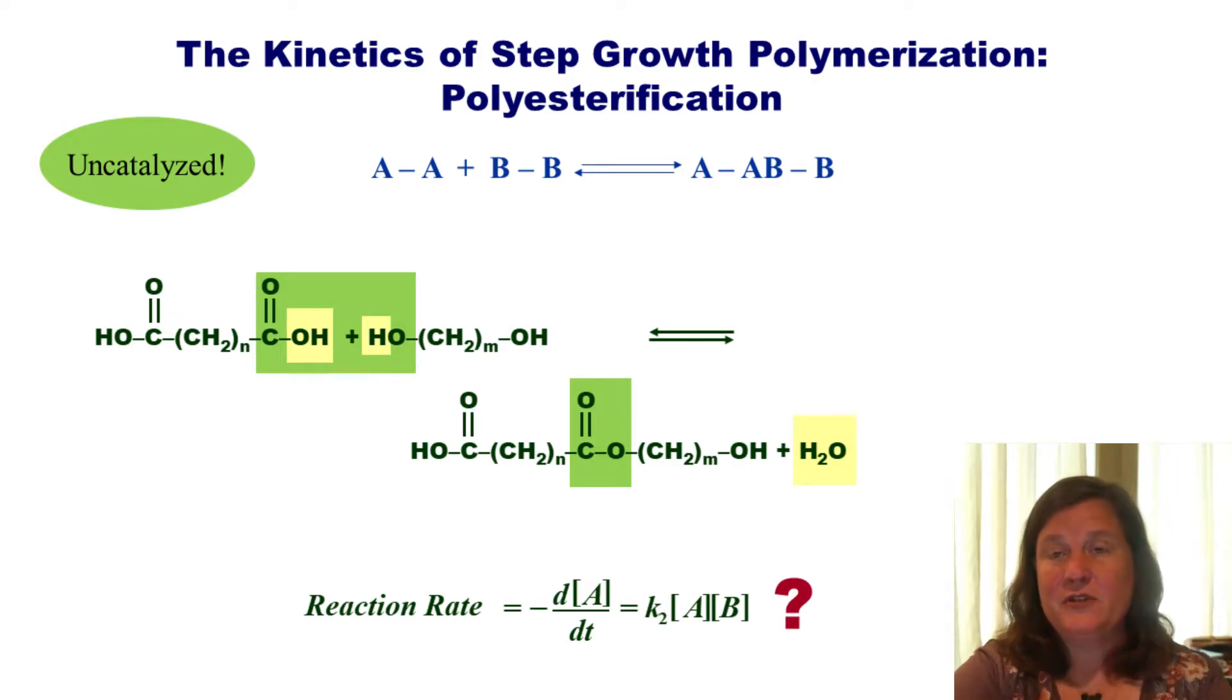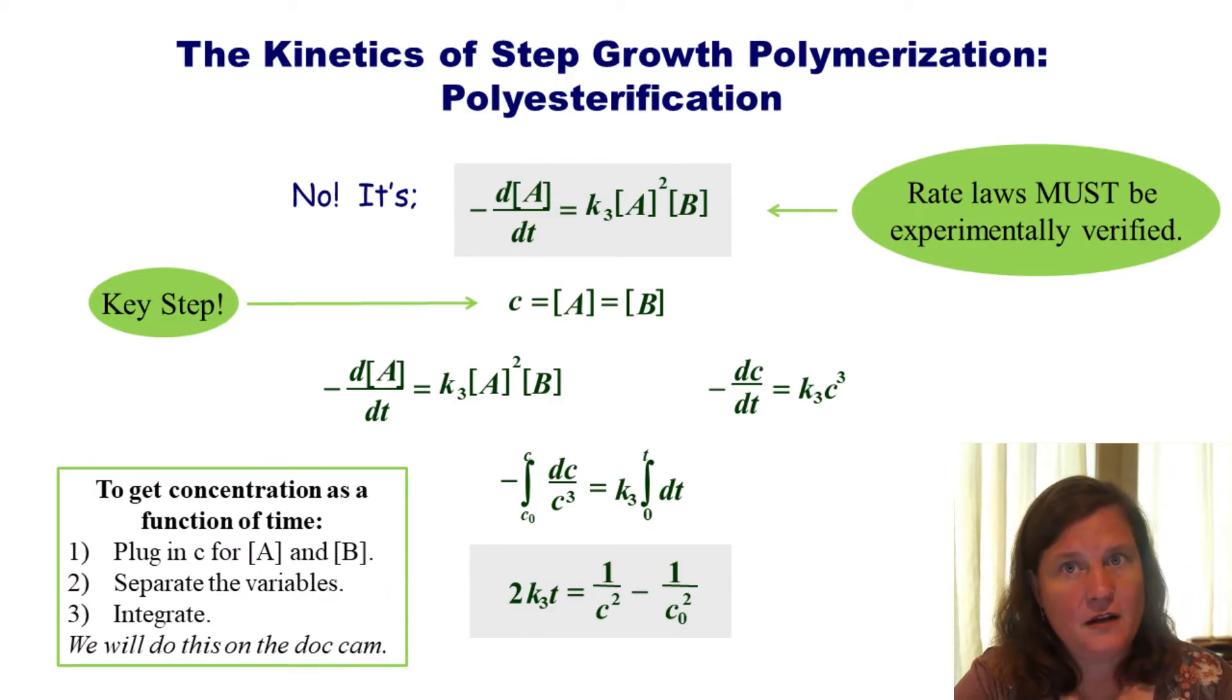So we're going to start with an uncatalyzed polymerization. We have a diacid, AA, reacting with a diol, BB, to make that polyester. So you might think that the reaction rate, if we're looking at the decrease in acid concentration as a function of time, would be proportional to the acid concentration times the alcohol concentration. Makes sense? That's not the case for an uncatalyzed polymerization. This is why rate laws always have to be experimentally verified. In this case, an uncatalyzed polymerization, the rate of decrease of acid groups with respect to time, the polymerization rate, is equal to the rate constant times the concentration of acid groups squared times the concentration of alcohol groups. That's an experimentally verified rate law.